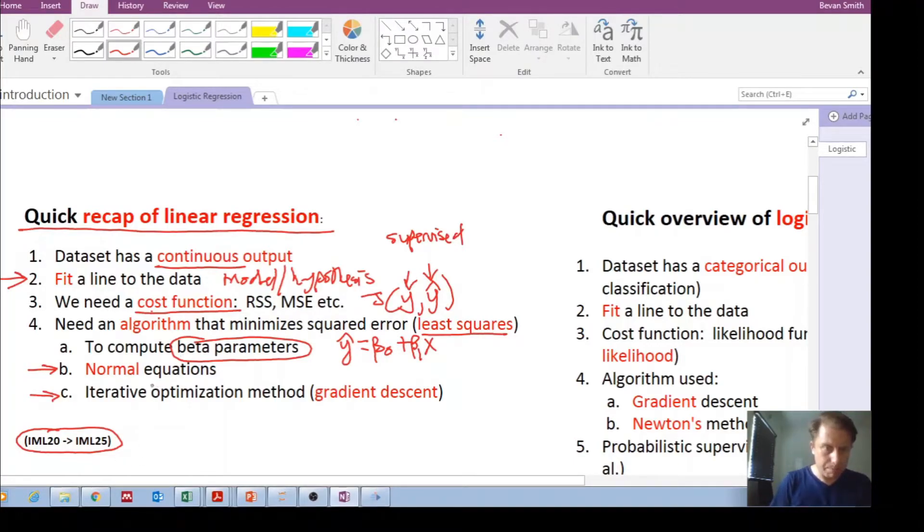If the normal equations were not working, then we could solve for the beta parameters using an iterative optimization method such as gradient descent. It's not the only one, but that was an example that we used.